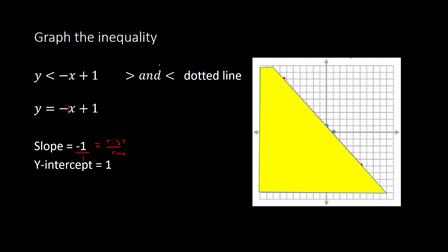This is analogous to when you graph with one variable. When you graph with one variable, say you had x is greater than 4 — it does not include 4, so it would be like an open circle at 4. The open circle when you graph on a number line is analogous to the dotted line here with greater than or less than. And if you have the equal sign included, then it's going to be a solid line — analogous to the same thing with one variable, where if x is greater than or equal to 4, it's going to be a closed circle.